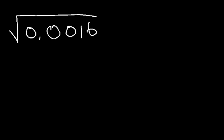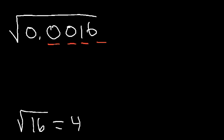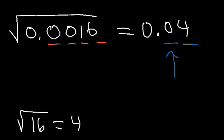Let's try another example. What is the square root of 0.0016? We know that the square root of 16 is 4. And because we have four digits to the right of the decimal point, our final answer is going to contain only two digits to the right of the decimal point. So it's going to be 0.04 — you want to put the 4 as far to the right as you can. If you type the square root of 0.0016 in your calculator, you're going to get 0.04.